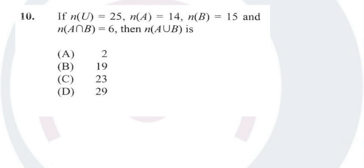Now I had accidentally left off question 10, so here is question 10. If the number of elements in the universal set is 25, and the number of elements in set A is 14, and the number of elements in set B equals 15, and the number of elements in A intersect B is 6, then the number of elements in A union B is...